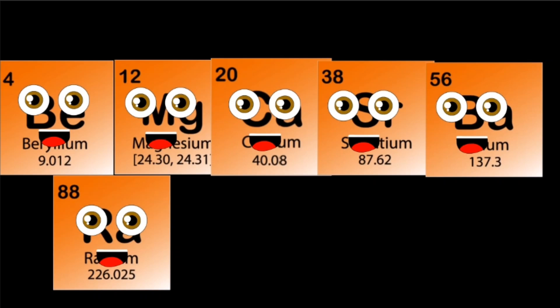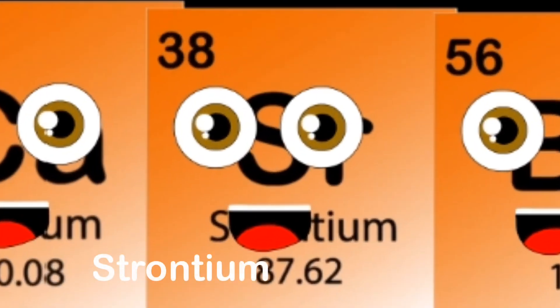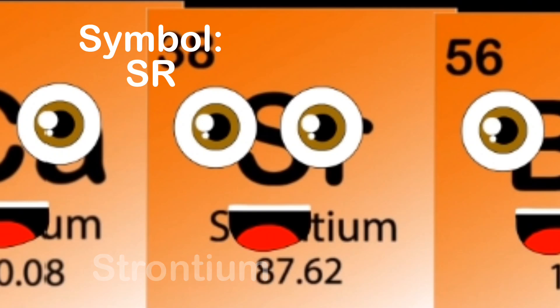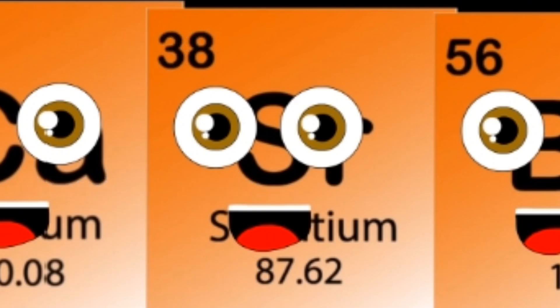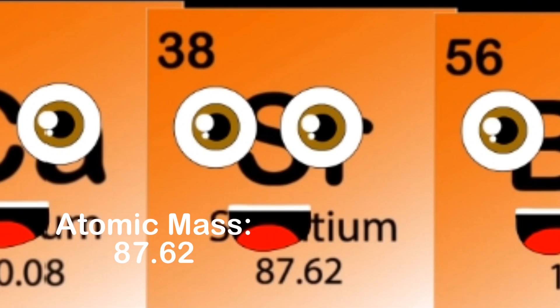Strontium is my name, Sr is my symbol. My atomic number is 38 — that's a proton count in me. I'm a soft, silver-white or yellowish metallic element. My atomic mass is 87.